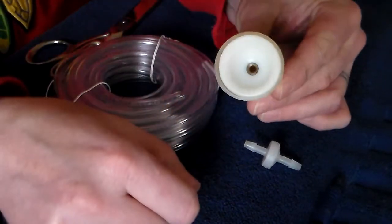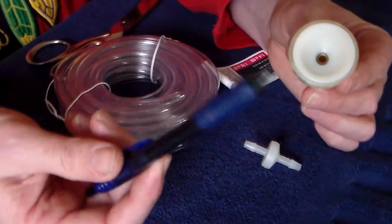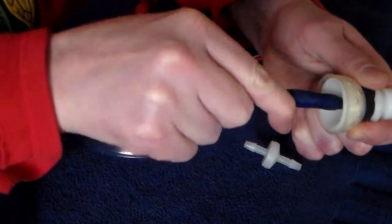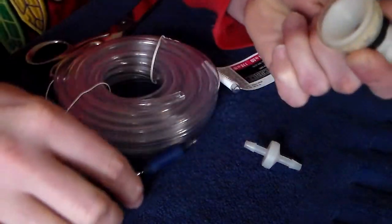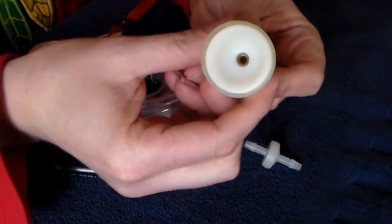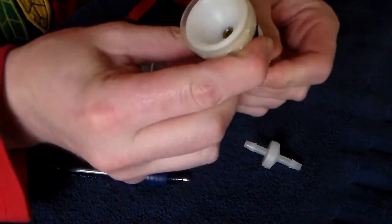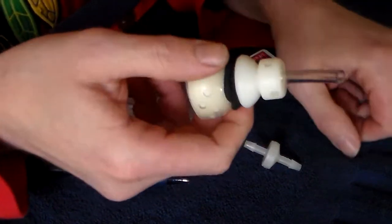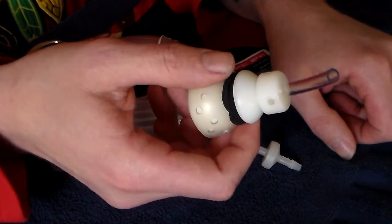If this is snug on yours, you can take a pin and use the tip of the pin to push a little harder and get it set in there nice and snug so that it is sealed. You now have your tubing coming through the top.